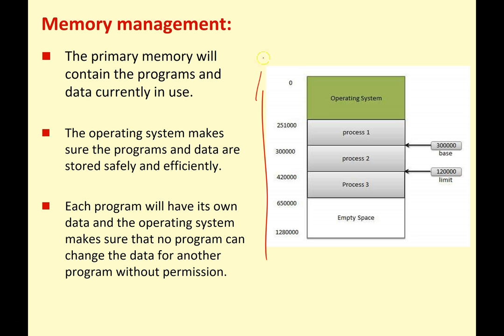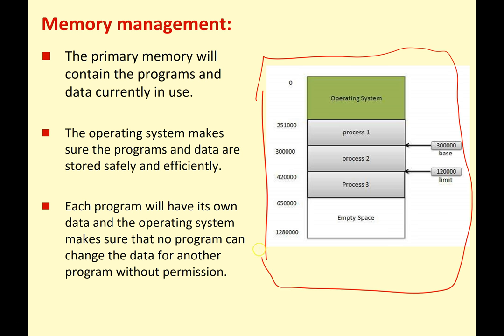Looking at the diagram here, we've got a simplified diagram of RAM. You can see the operating system is taking up a fairly big chunk of memory. We've got three processes that are running, and we've got some free space at the end. The operating system has to remember and allocate how much RAM each process has, what the addresses are, and it has to be able to increase or decrease the size depending on the needs of the process. It has to make sure that one process doesn't overwrite another process, which could cause things to crash.